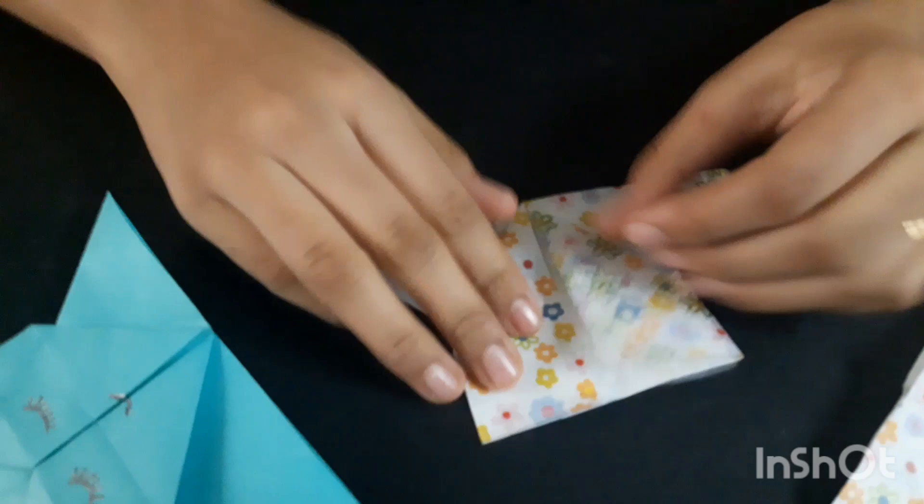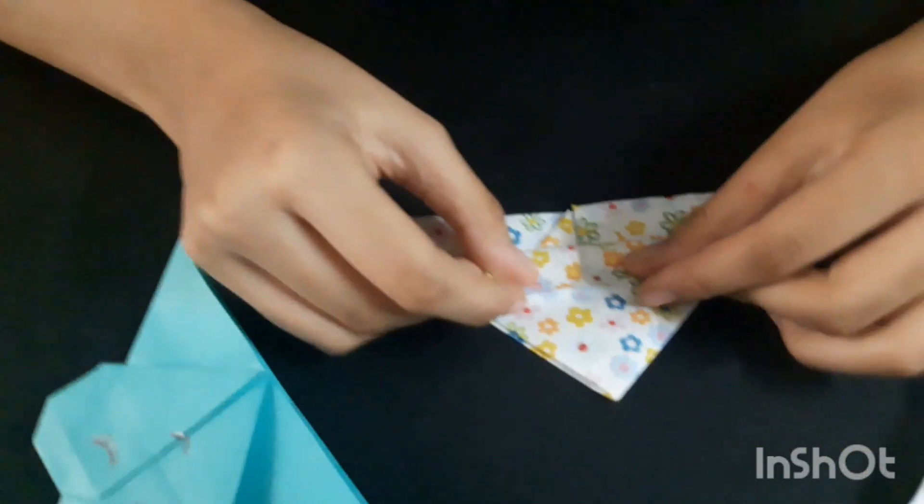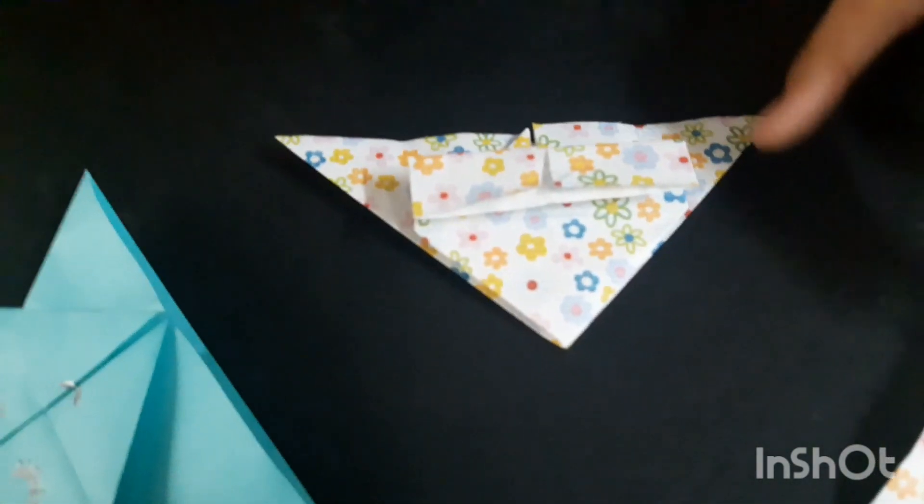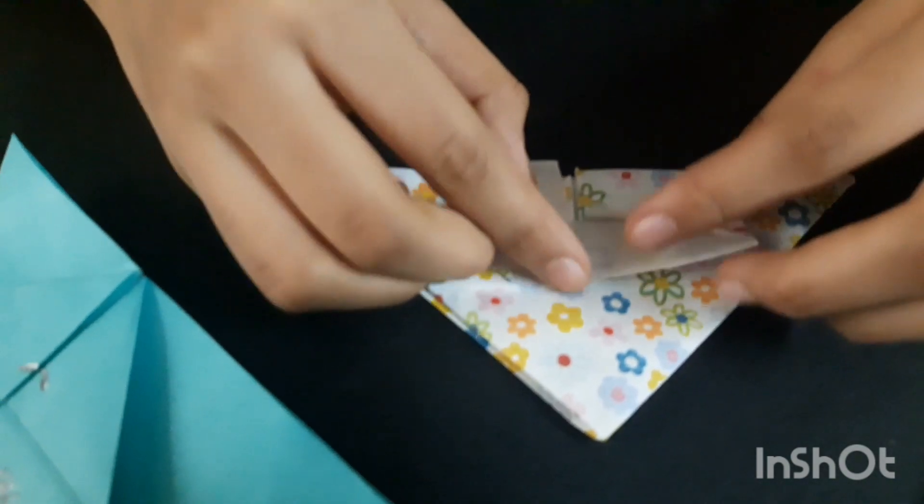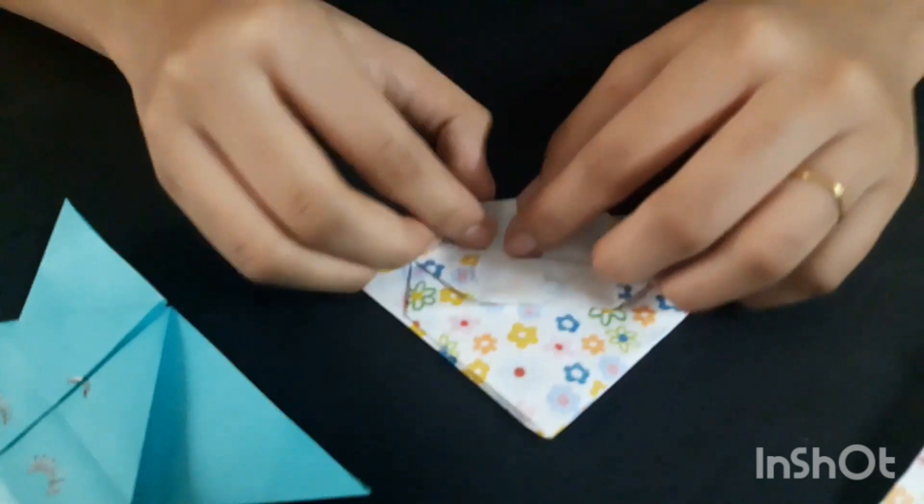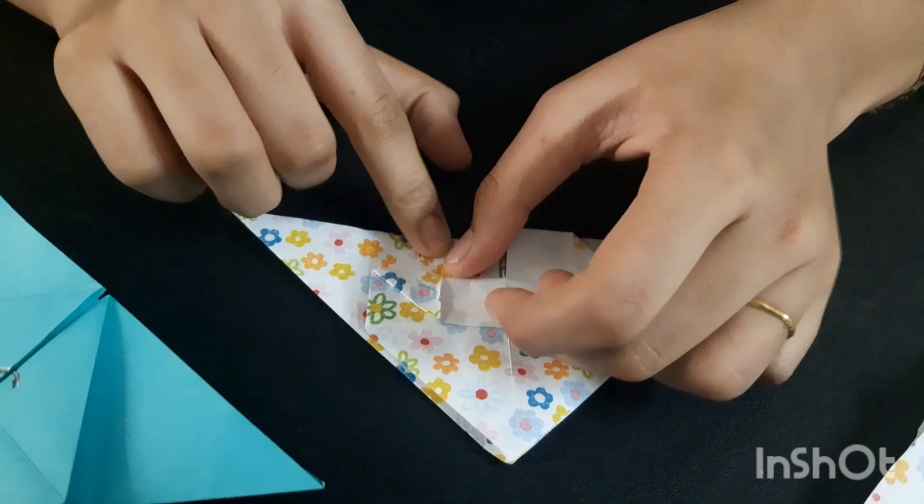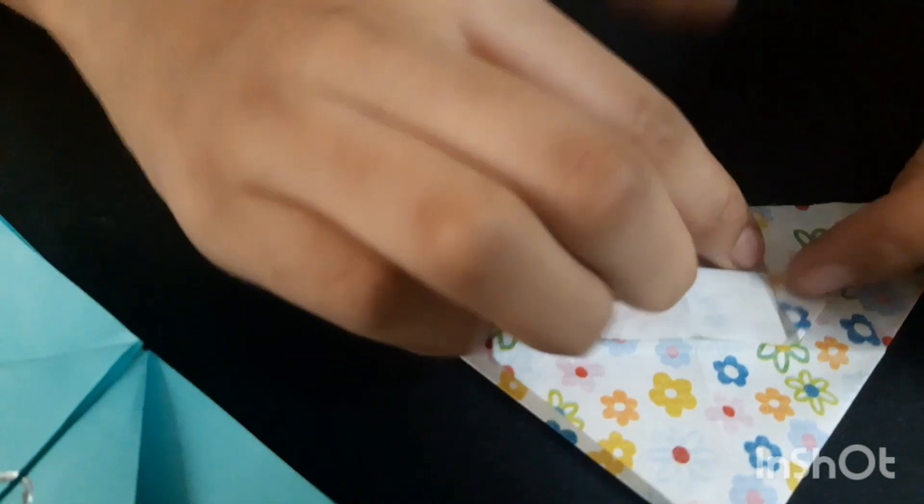Now fold it back and fold it like this. Open it up and fold it like this. Fold this flap and fold it like this. Fold this flap to its face. Pull this flap. Now fold this one up here too.